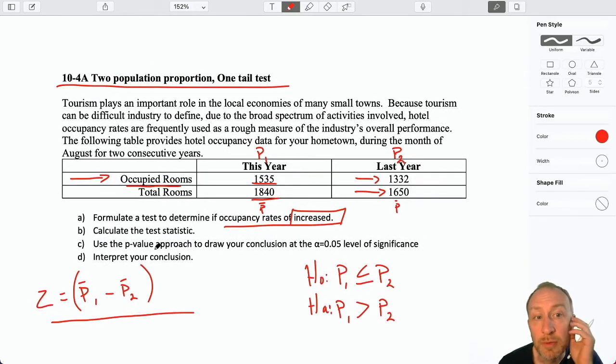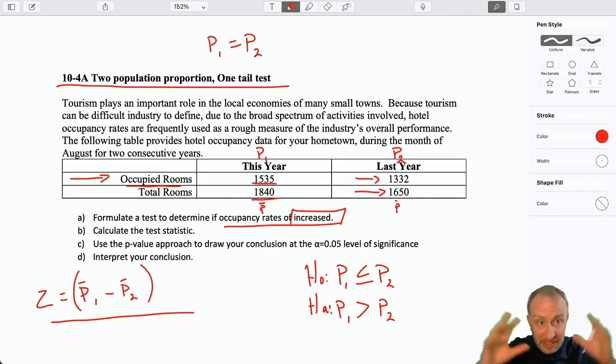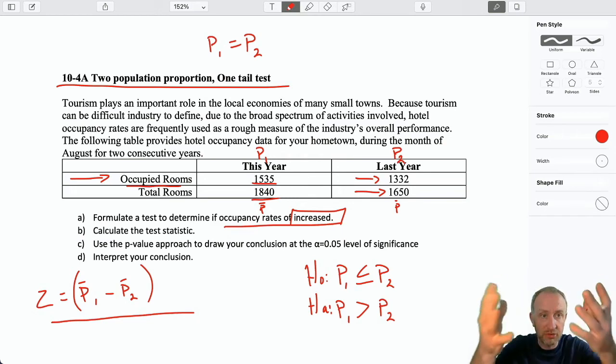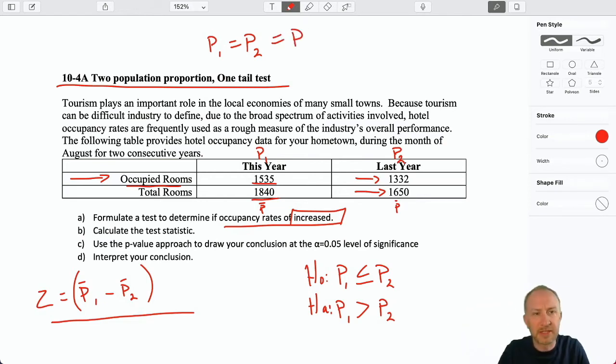Remember, when we're doing tests, we always assume that the null is true with equality unless we have evidence to show otherwise. When we make this assumption about the null, that our two values, in this case our two proportions, are no different. Well, what that means is that if P1 is equal to P2, given that assumption that we make, the methodological approach to our testing here is that we're assuming that these are equal. If P1 is equal to P2, well then they're equal to some common population proportion. For the purpose of our test, we need an estimate of that common population proportion.